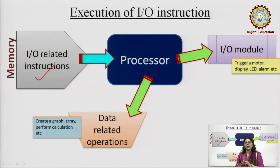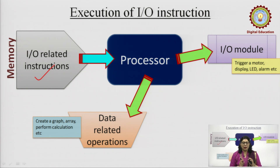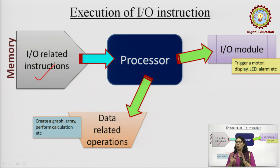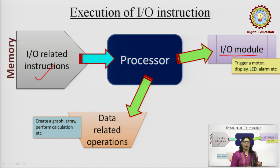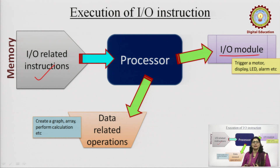From memory, all these instructions will be called inside the processor — that is, to its internal registers — so that we can perform arithmetic or logical operations on them. When the processor executes these, they split into two parts. One is results related to the I/O module — for example, to trigger a motor, to switch an LED on or off, or to generate an alarm. The other is data-related operations like creating a graph, generating an array, or performing a calculation.